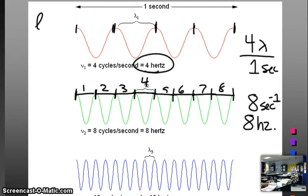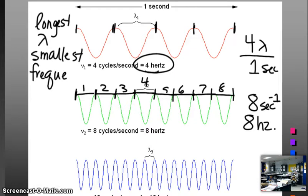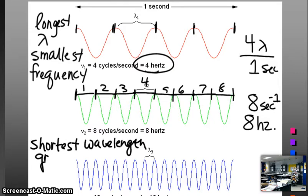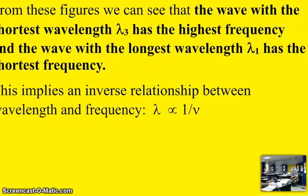So the longer wavelength, this one has the longest wavelength in distance, but it has the smallest frequency. That makes sense. The longer the wave is, the less you'll have in that given amount of time. Whereas this wave has the shortest wavelength, but since they're all traveling at the same speed, it has the greatest frequency. So hopefully you're seeing there's an inverse relationship between wavelength and frequency. And we can, of course, quantitate that relationship.